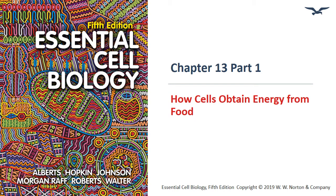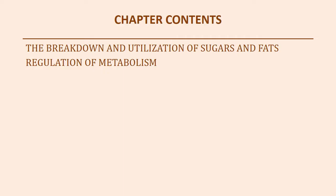Hello everyone, welcome to a new chapter. This is chapter 13, entitled 'How Cells Obtain Energy from Food.' This chapter is basically going to discuss the process of cellular respiration, which involves the steps to convert energy from a sugar molecule — specifically glucose — into chemical energy in our ATP molecules. We need to examine the steps, reactants, and products for each step.